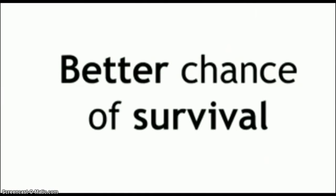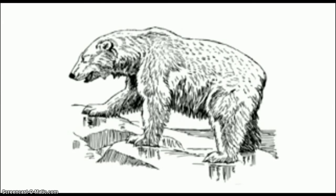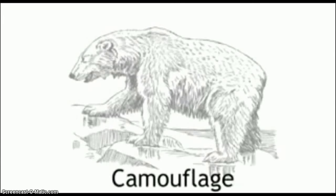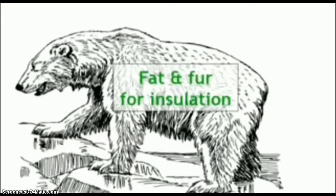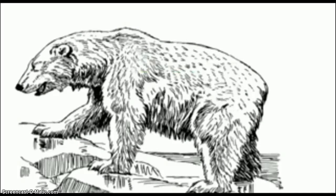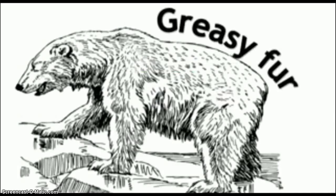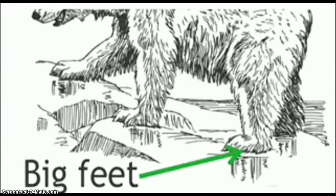A well-adapted animal is the polar bear, who has many adaptations for survival in the Arctic. Their white appearance camouflages them against snow, making it very hard for prey to spot them. They have thick layers of fat and fur to insulate them from the cold, and their fur is greasy so it dries quickly after swimming. They have big feet to spread their weight on the ice and increase grip, and a small surface area to volume ratio to minimize heat loss.